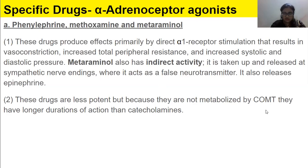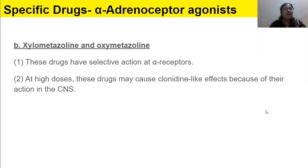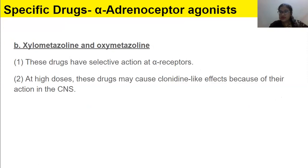Xylometazoline and oxymetazoline have selective action at alpha receptors. At high doses, these drugs may cause clonidine-like effects because of their action in the CNS. Please refer back to the lecture from two sessions ago for the full slide on this topic.